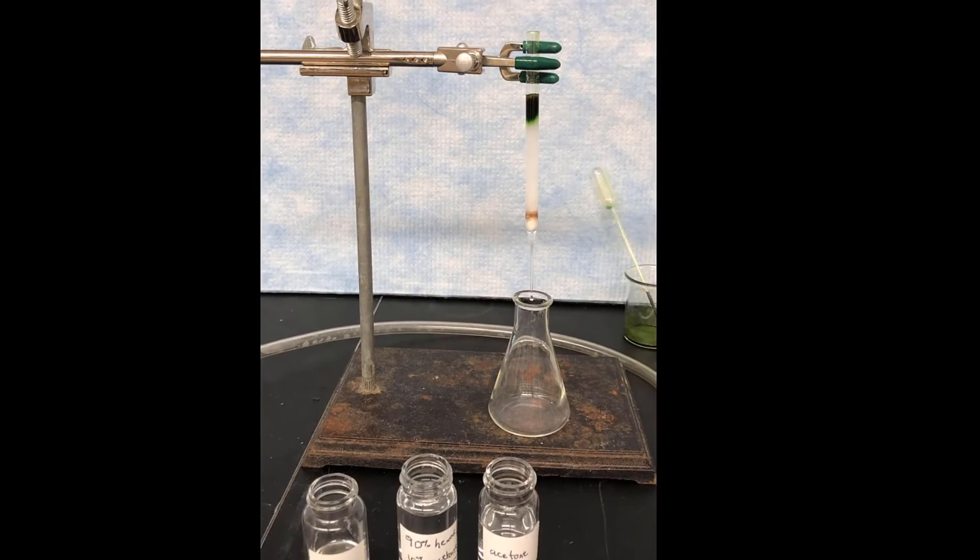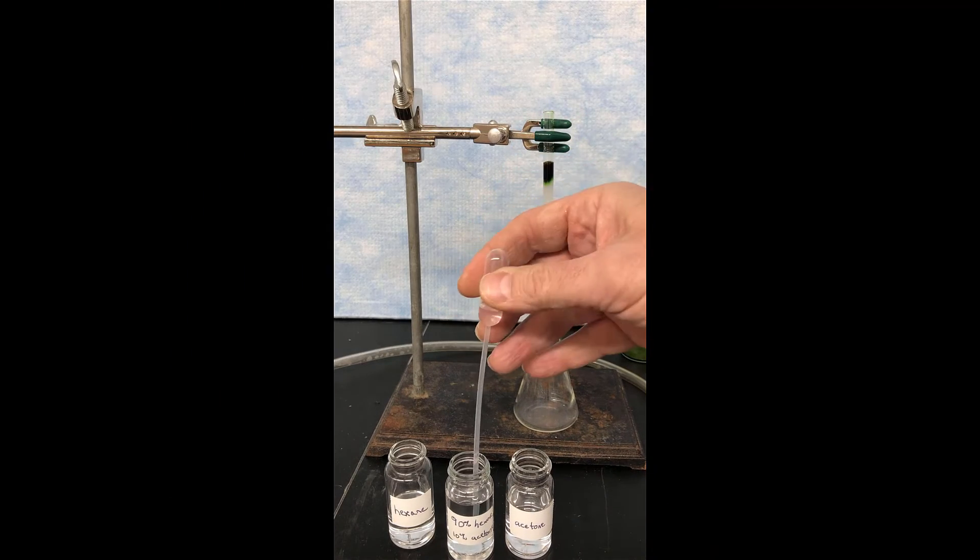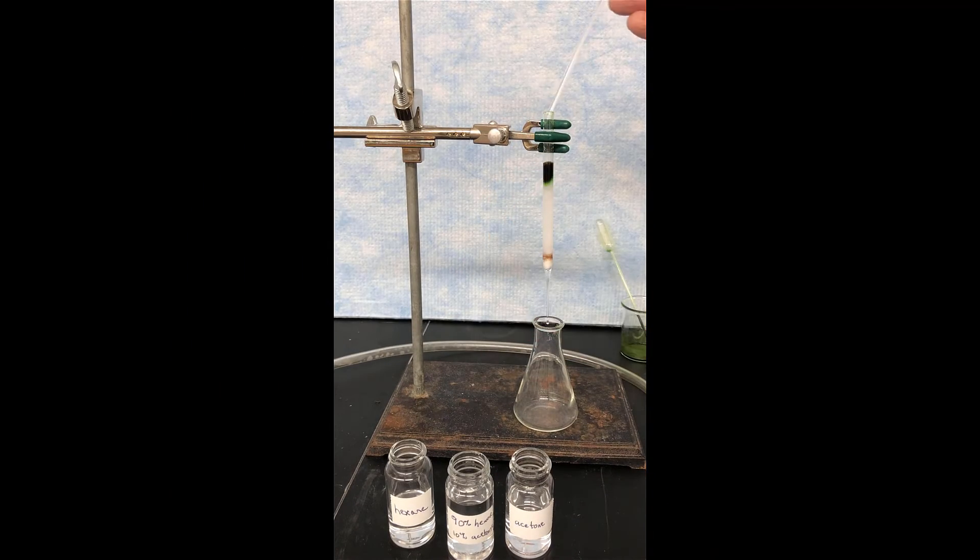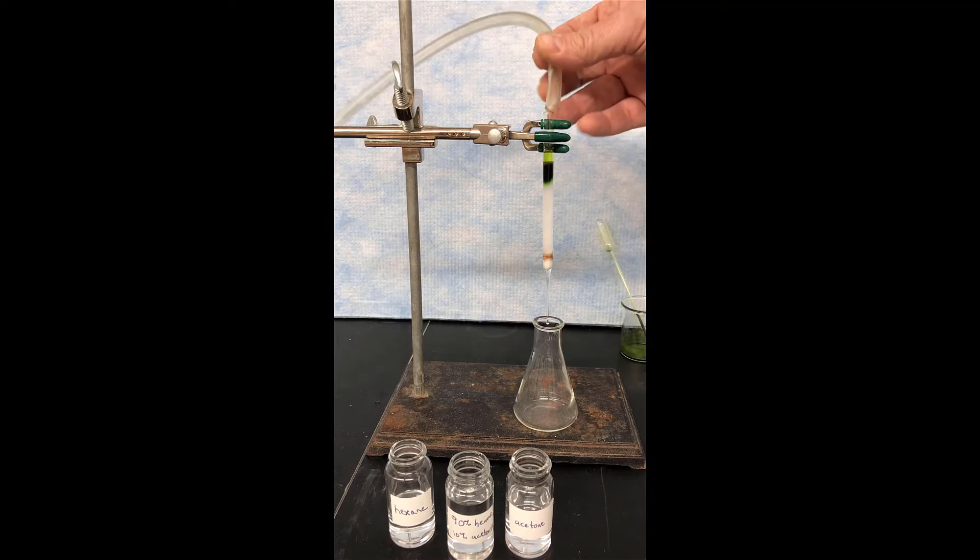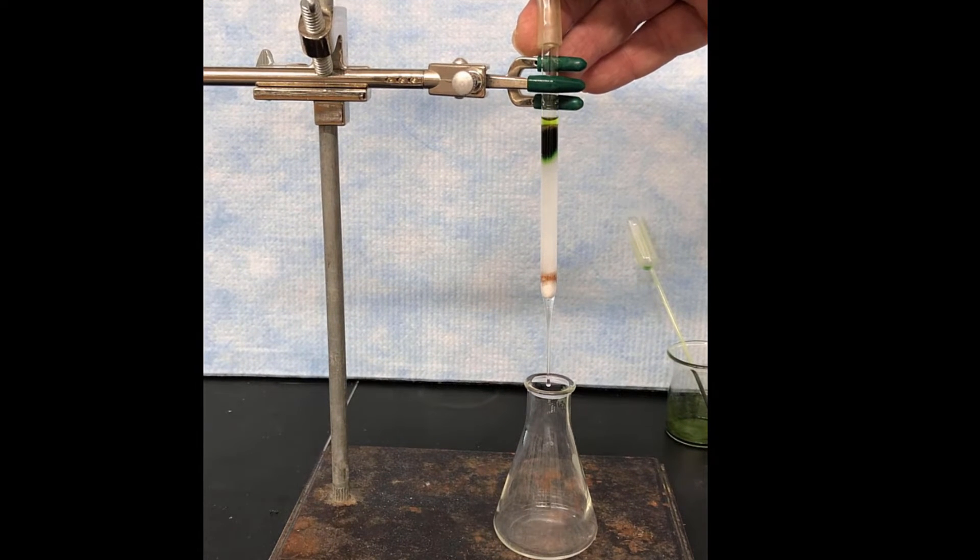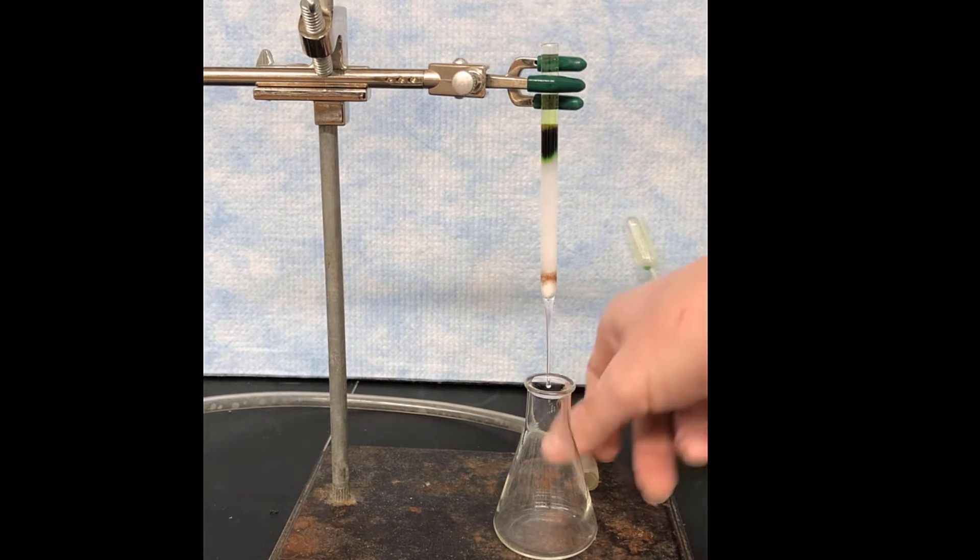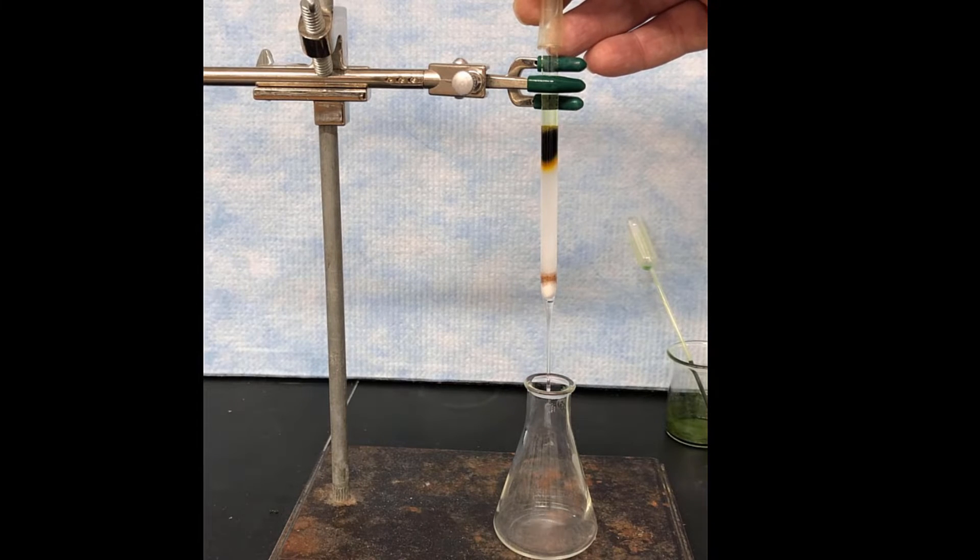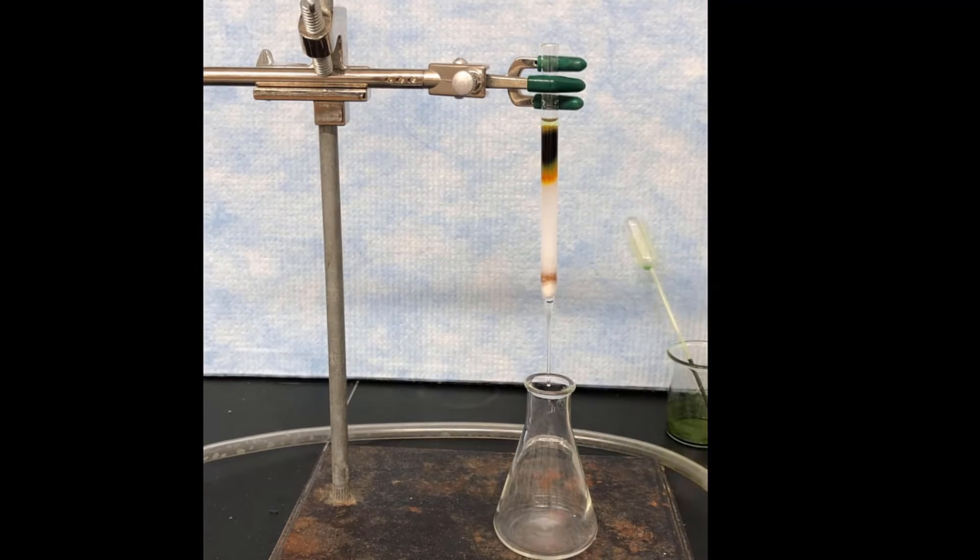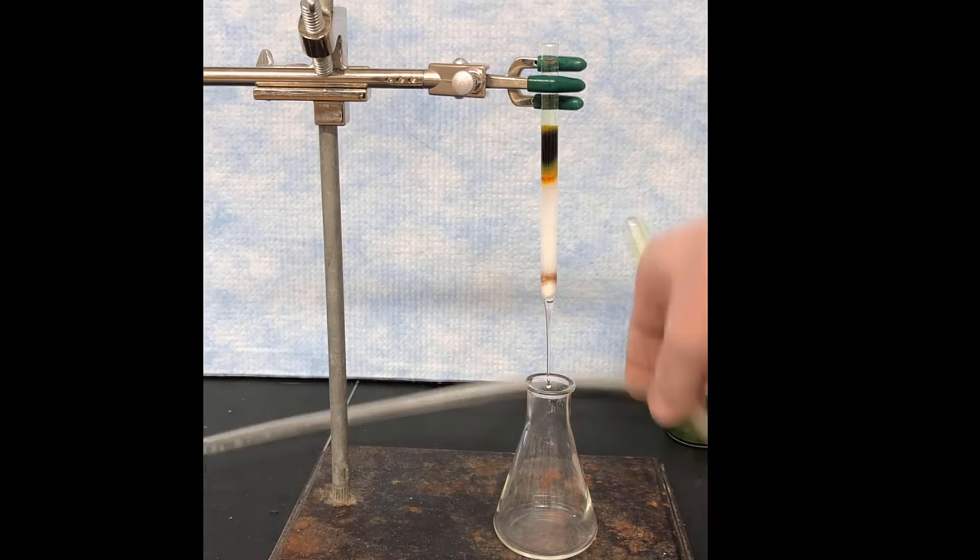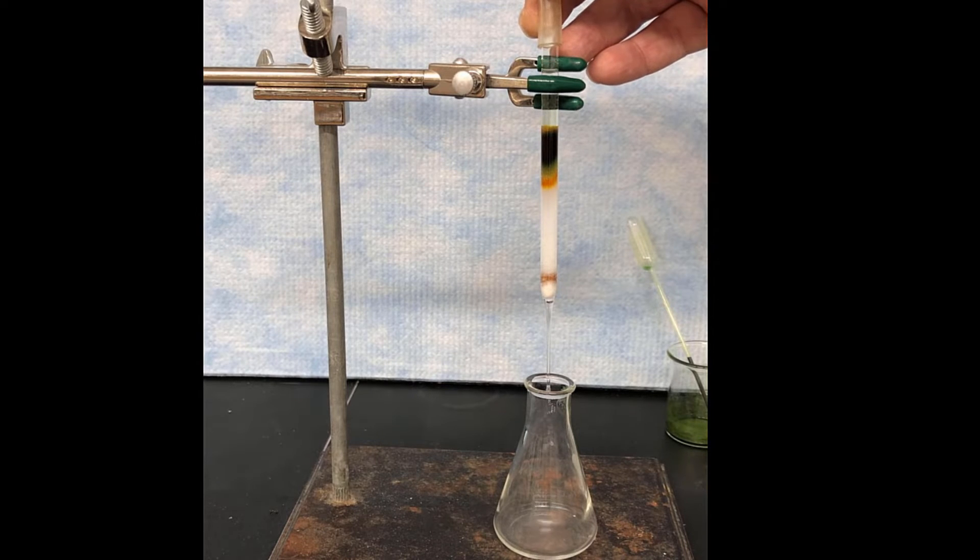Then we'll be ready to start eluting the column, and we're going to do that with the 90-10 solution of hexane to acetone. So that gets pipetted on, and then when that gets flushed through with the compressed air, the pigments will start to move. So what you'll be able to see here is there's a yellow band that's going to start moving out in front. Now that is the beta carotene fraction. So beta carotene is the least polar thing in the pigments, the spinach pigments, so it moves the fastest on silica gel.